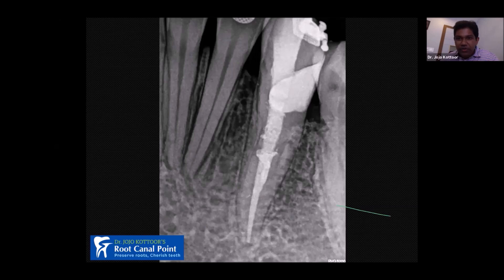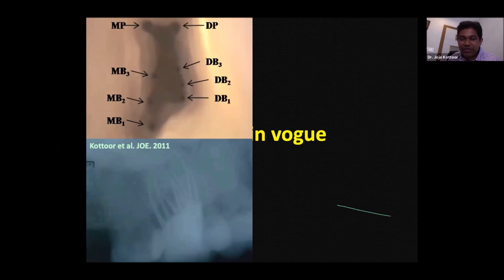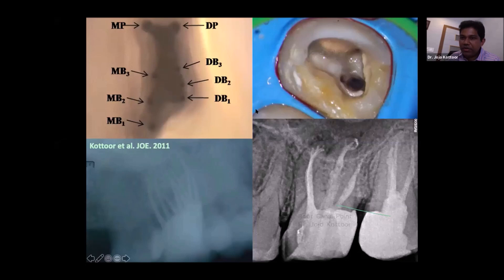Coming to the conclusion: when I was a postgraduate student in 2009, we were more focused on finding root canal orifices — getting eight canal orifices on a maxillary molar. Now we are more focused on the apical exiting. A decade after the eight-canal case, I got four canals, but after obturation, the mesiobuccal root showed five, the palatal showed three, and the distal showed one — totaling nine root canal systems. The change in vogue is that we are now more focused on how well we obturate the apical portion.